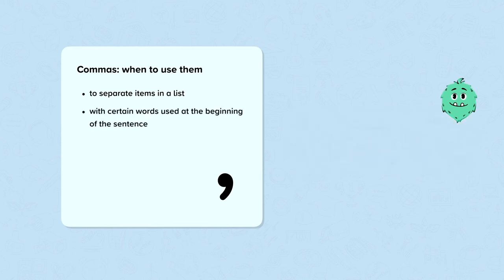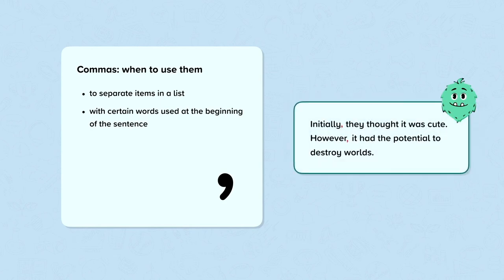We also use commas with certain words at the beginning of a sentence. For example: "Initially, they thought it was cute. However, it had the potential to destroy worlds." Here, the commas are used after the adverbs "initially" and "however." There are several different types of adverbs and adverbials, and generally at the beginning of a sentence they need to have a comma after them.